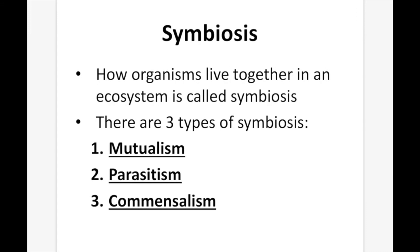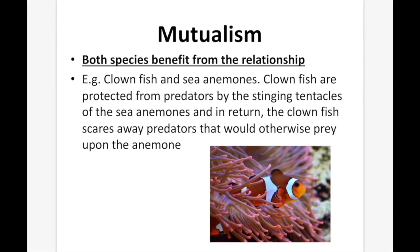How organisms live together in an environment is called symbiosis, and there are three main types: mutualism, parasitism, and commensalism. Mutualism is when both species benefit from the relationship. A good example is clownfish and sea anemones — clownfish are protected from predators by the stinging tentacles of the sea anemone, and in return, the clownfish scares away predators that would otherwise prey upon the anemone. So having the clownfish there protects the sea anemone, and having the sea anemone protects the clownfish.